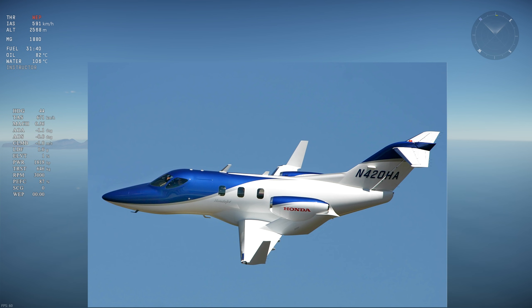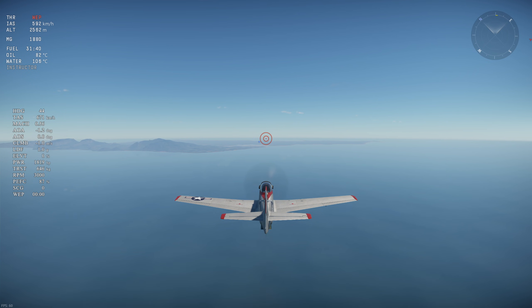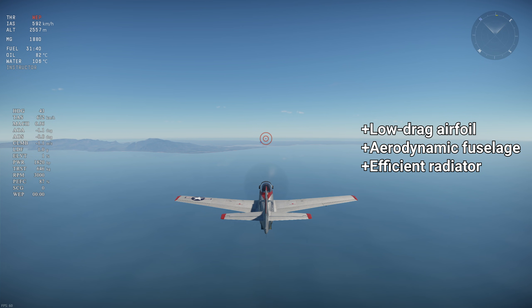All in all, the Mustang is still a low drag aircraft, but it's not because of its laminar flow airfoil. It's due to the combination of a low drag airfoil, aerodynamic fuselage, efficient radiator, and high quality production which reduces surface roughness and drag.